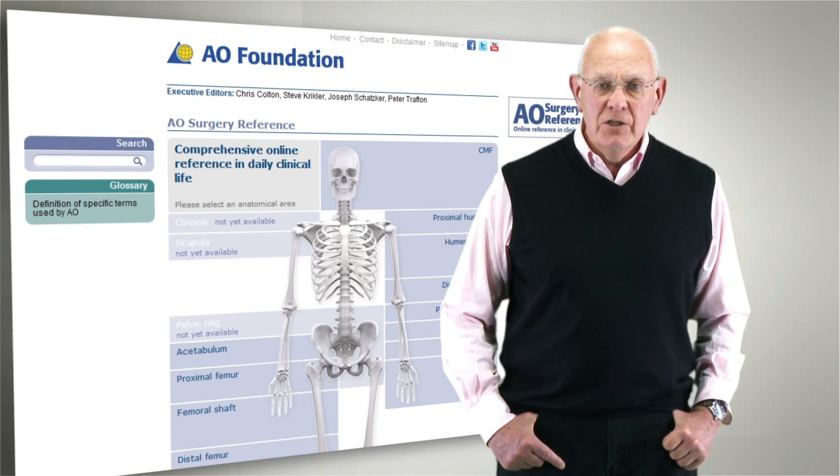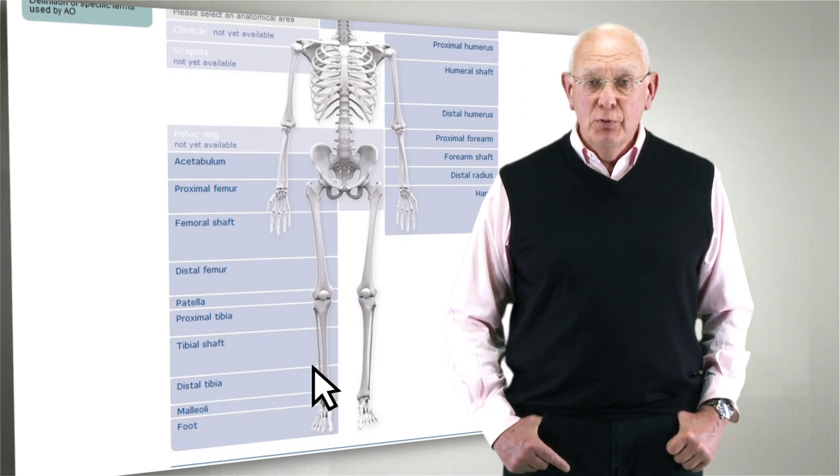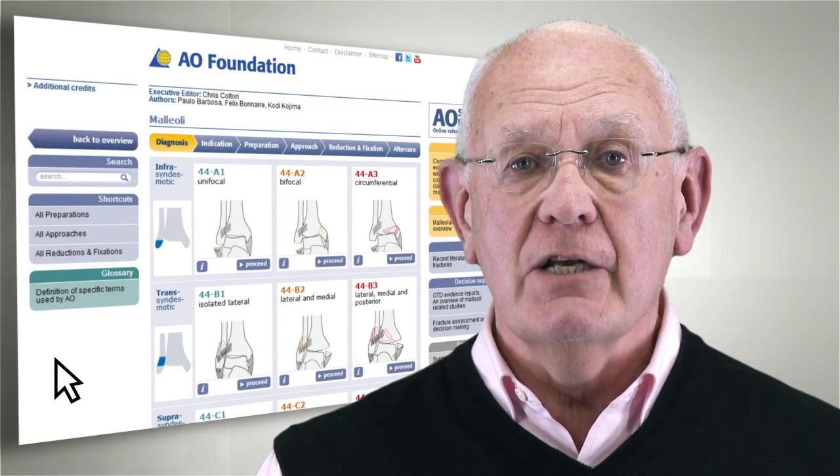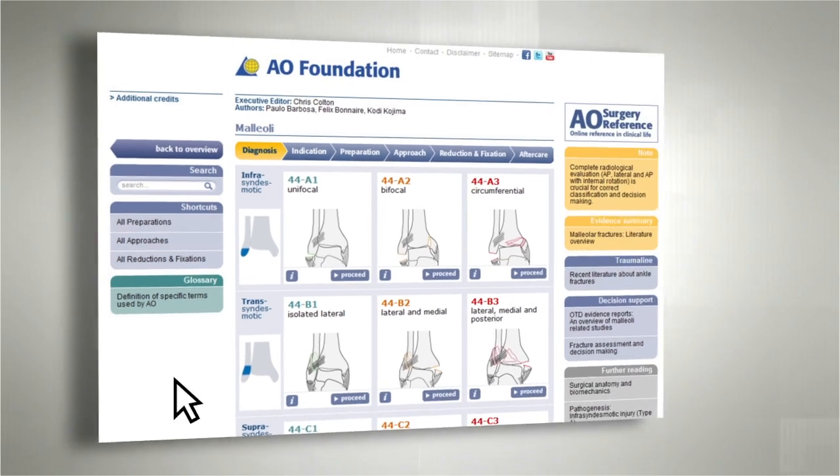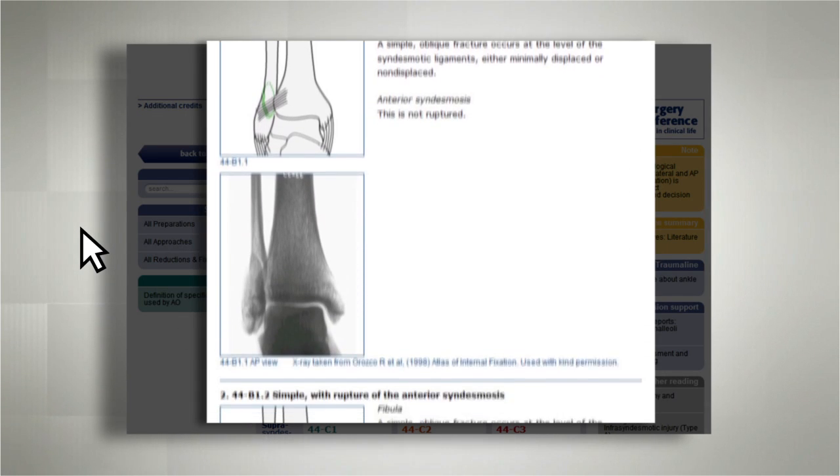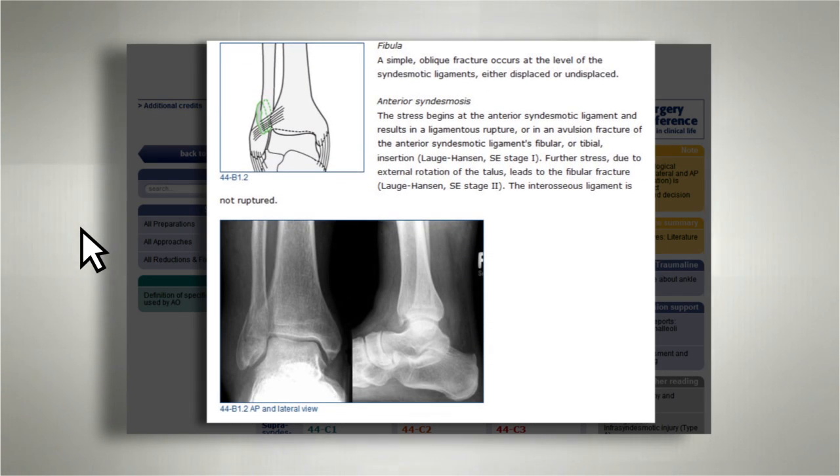I should like to show you how AO Surgery Reference can support you in preparation for surgery using a malleolar fracture as an example. You will first confirm the diagnosis by reviewing information about the classification and select the relevant fracture pattern.